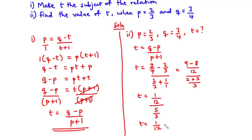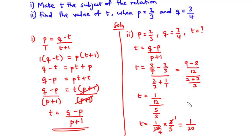So we have t equals 1 over 12, and then we take the reciprocal, so this becomes times 3 over 5. Now 3 goes into 3 once and into 12 four times. So 1 times 1 is 1, and 4 times 5 is 20. So therefore the value of t is 1 over 20.